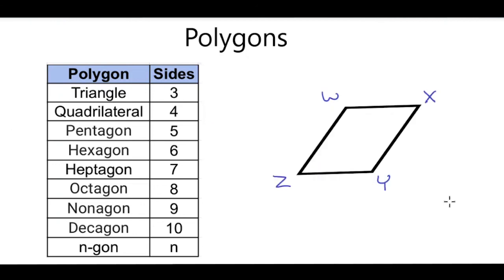How about this polygon here? This polygon has four sides. So we will call it a quadrilateral. And we'll call this quadrilateral W, X, Y, Z. And that is how you classify polygons and name it.